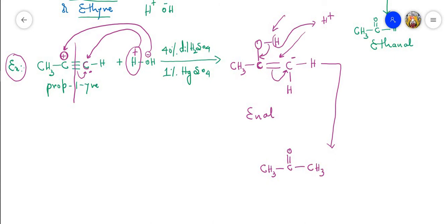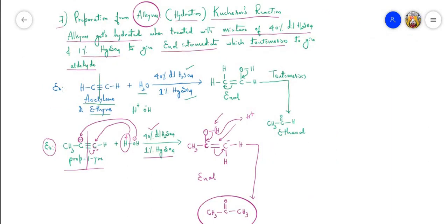So, a derivative of acetylene (homologue of acetylene) when subjected to hydration using 40% dilute H₂SO₄ and 1% mercuric sulfate gives ketones. To summarize the seventh method: acetylene gives acetaldehyde; formaldehyde cannot be prepared by this method; addition of water follows Markovnikov's rule for unsymmetrical alkynes; and homologues of acetylene give ketones.